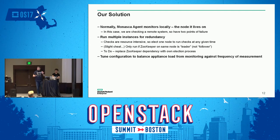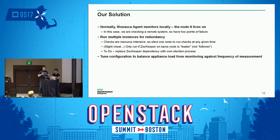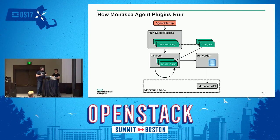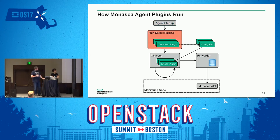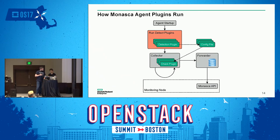Because the two different APIs had different performance overhead, we were able to tune how frequently they were called — not loading down the cluster with too many requests while getting information at a usable frequency for the customer. The agent starts up, detection plugins run and optionally generate configuration files, and those configuration files have two important components: they configure the collector — which runs the checks — and they configure the checks themselves.